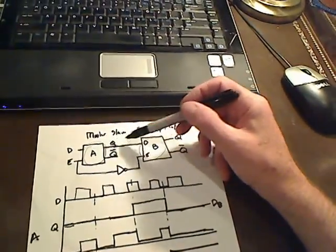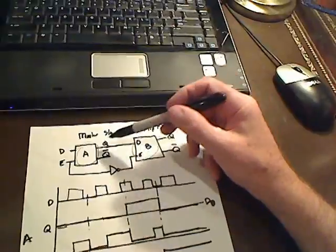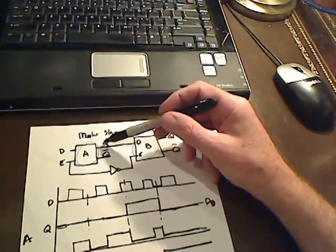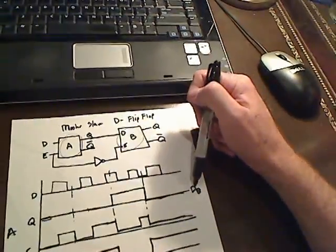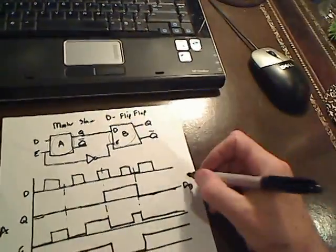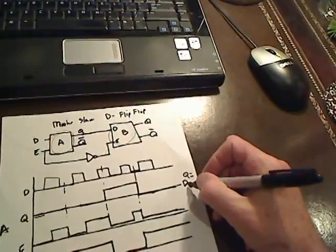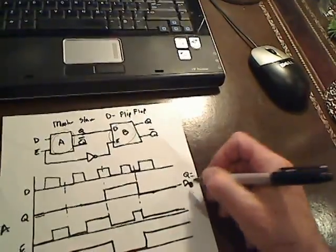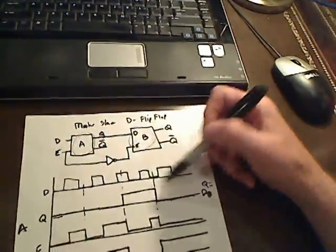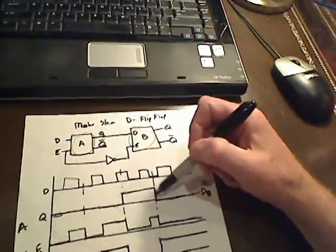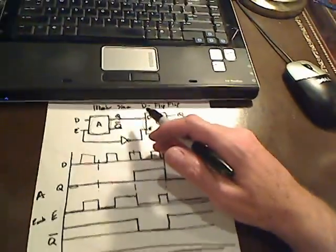Q feeds directly into D. So in our case, Q will be equal to D — Q equals D of B, the slave. So we can use this line for both timetables.